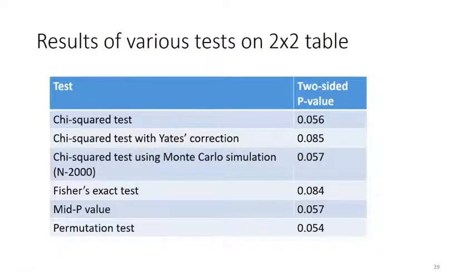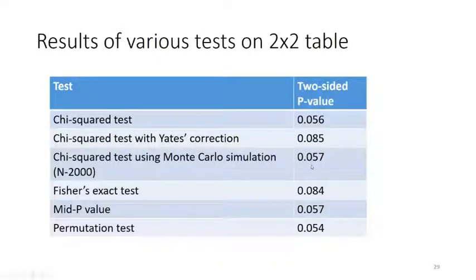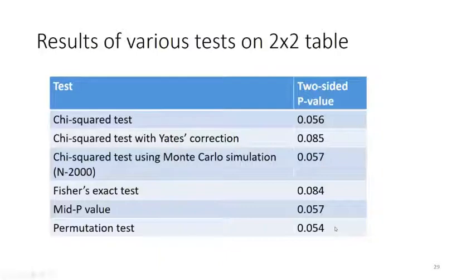Here are the results for the two-by-two table. The chi-squared test with Yates' correction gives a much larger p-value. The normal chi-squared is almost statistically significant. It's well known that Yates' correction can give a rather more conservative value. Using Monte Carlo simulation — not surprisingly, since it doesn't use a continuity correction — gives more or less the same value as the ordinary chi-squared. Fisher's exact test gives a value very similar to the Yates'-corrected chi-squared. The mid-P value, which I prefer, gives a value quite close to the ordinary chi-squared when group sizes are similar. The permutation test gives a p-value very similar to the chi-squared test, which is quite reassuring.